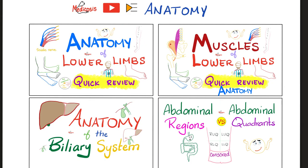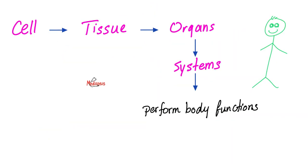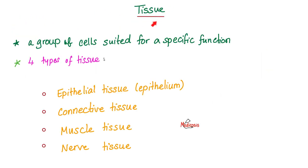This is my anatomy playlist. What's the building unit of your body? The cell. A group of cells will make tissue. How many types of tissue do we have? We have four types: epithelium, connective, muscle, and nerve. How does the muscle insert into bone? The answer is via a tendon.